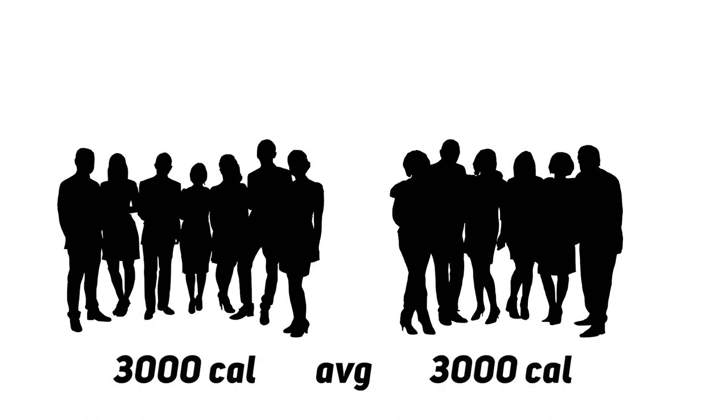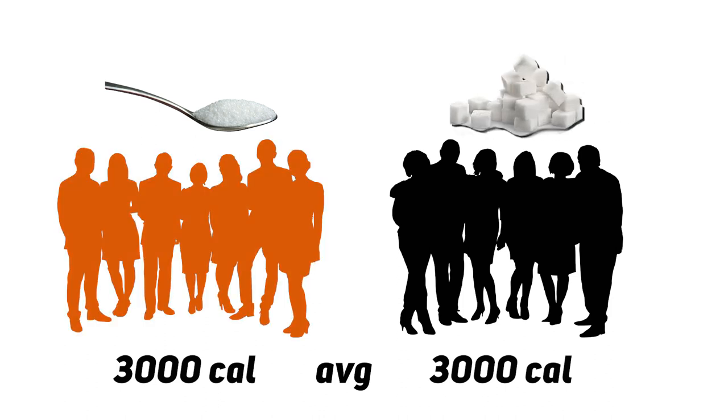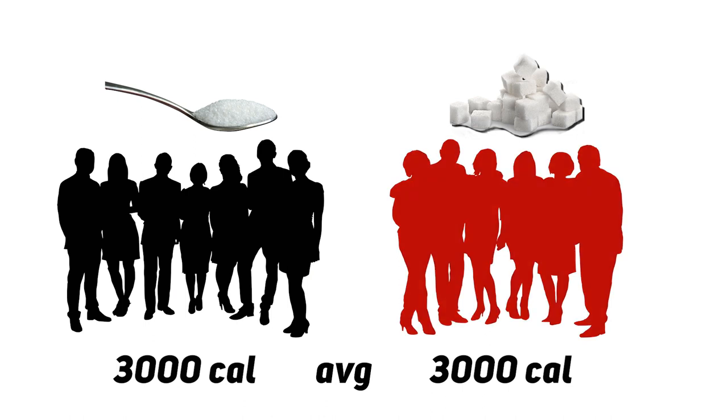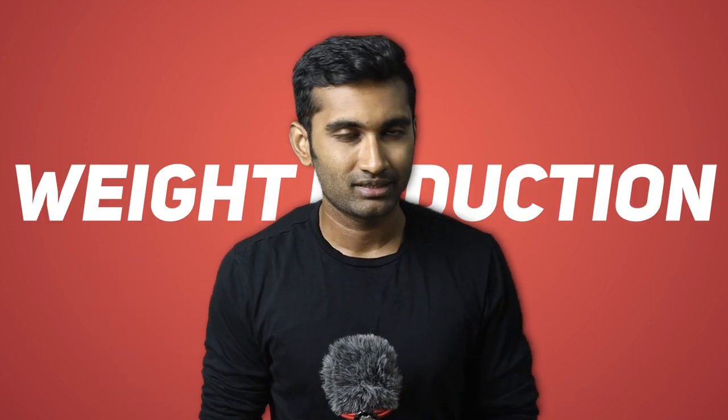Consider a group of 100 people split 50-50 into two groups, both consuming around 3,000 calories on average. One group uses sugar, and the other uses non-nutritive sweeteners. When you compare them, the non-nutritive sweetener group shows more weight reduction. This is because calories are equalized — the sugar group consumes equal calories while the sweetener group may consume fewer.